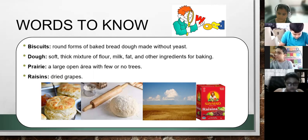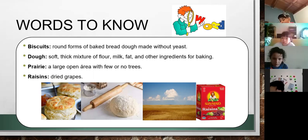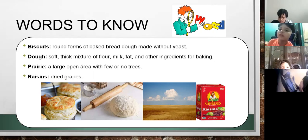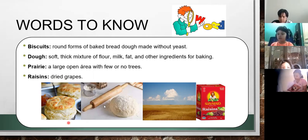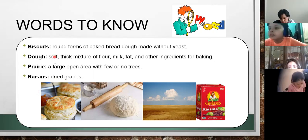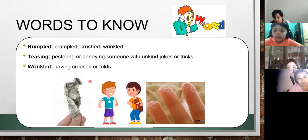Also in rosca de leche they use raisins — different foods use raisins to give flavor. So those are the first four words: biscuits, dough, prairie, and raisins. Now let's go and see the other words; we have three more.